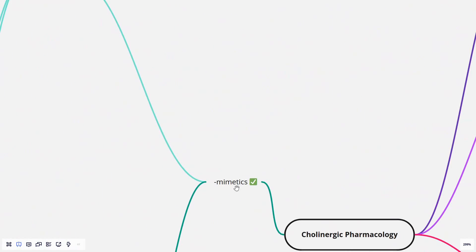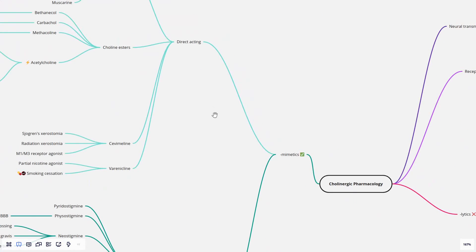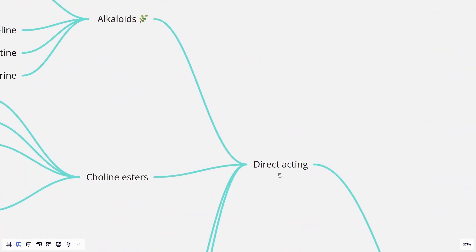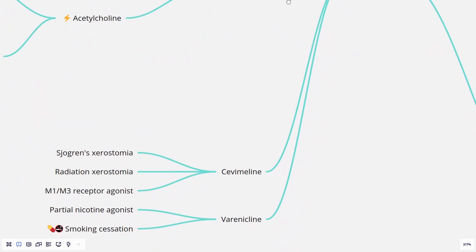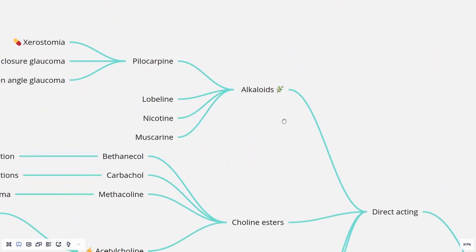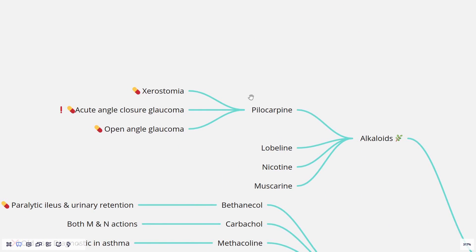Next, we'll discuss mimetic drugs. Mimetic drugs are divided broadly into two: the direct-acting and the indirect-acting. First, the direct-acting drugs. Direct-acting drugs are alkaloids and cholinesters, and there are also two other newer drugs: cevimeline and varenicline. First, we'll talk about the alkaloids: we have pilocarpine, lobeline, nicotine, and muscarine. Pilocarpine is used in the treatment of xerostomia. It is also used in the treatment of glaucoma, both angle-closure and open-angle glaucoma. This is important to understand: pilocarpine is used in acute angle-closure glaucoma because it opens up the angle or the trabecular meshwork. Nicotine is the drug present in cigarettes and tobacco.